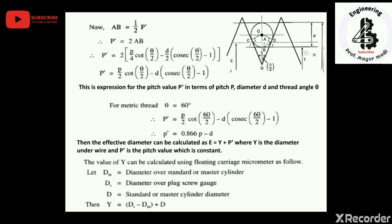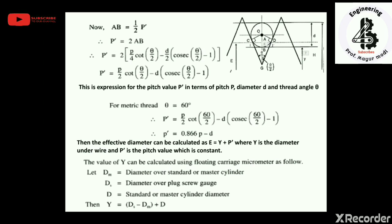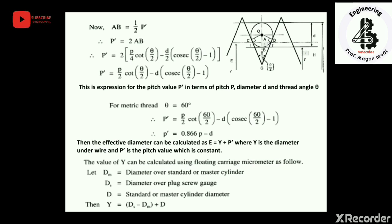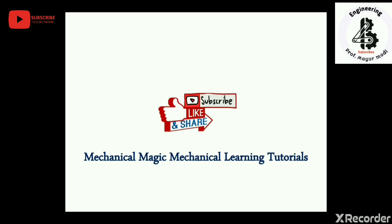The value of Y can be calculated using a floating carriage micrometer. Let dm be the diameter over the standard or master cylinder, ds be the diameter over the plug screw gauge, and D be the master cylinder diameter. The final relation is: Y = ds − dm + D. I hope you understand — please subscribe, like, and share Mechanical Magic Mechanical Learning Tutorials.